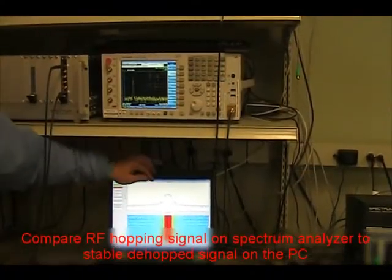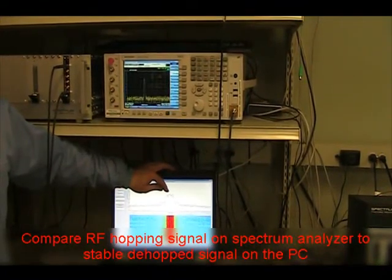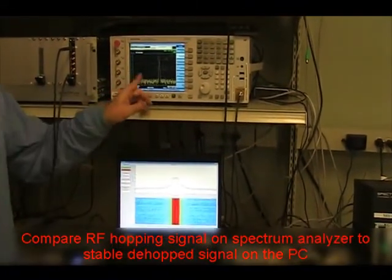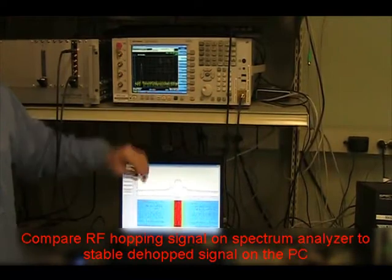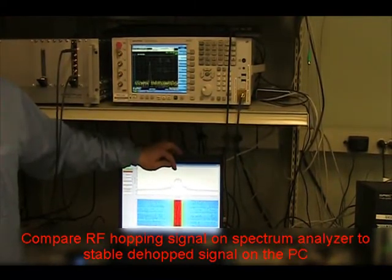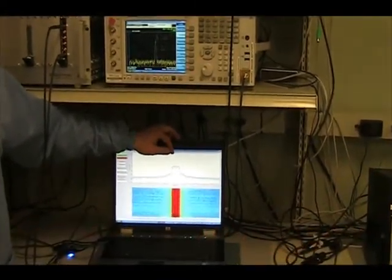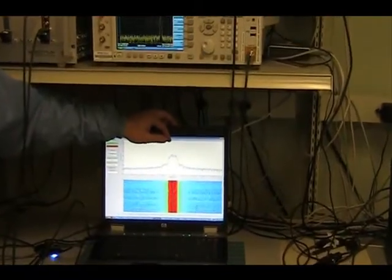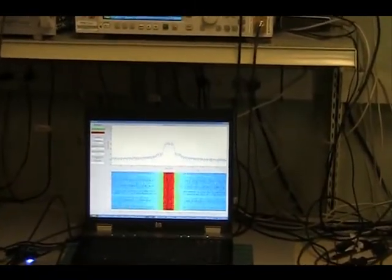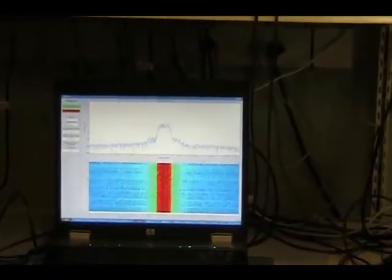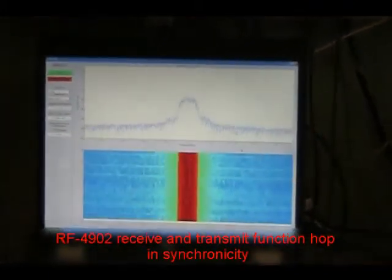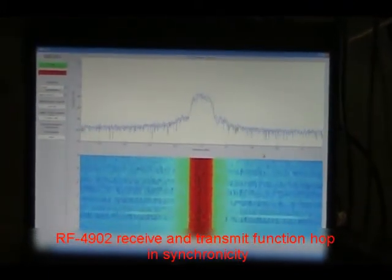You can see that the signal here is de-hopped. It's scanning on the Spectrum Analyzer at RF, but it's stationary in frequency for the signal that's come through the receiver and been de-hopped. So the receiver, you can see from this that the receiver is hopping in synchronicity with the transmitter.